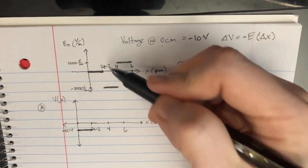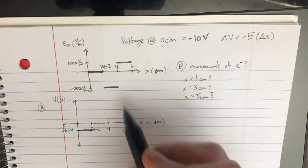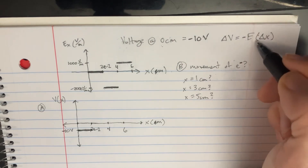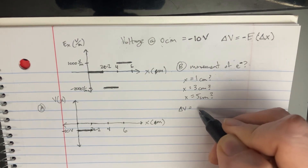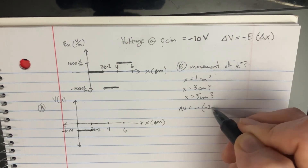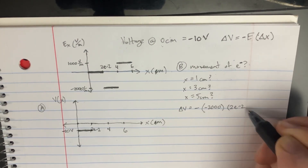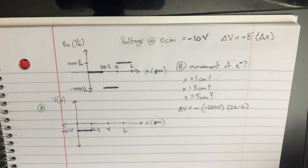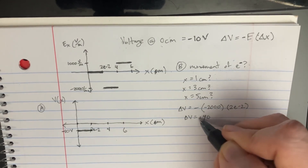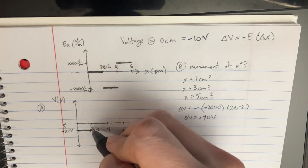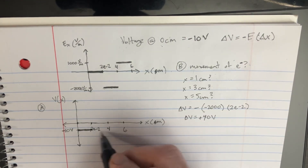Now, the next step is going to be that we're going through this field of negative 2,000, and that's going to be for 2 centimeters. We can calculate it here: delta V would be equal to negative 2,000, times the delta X, which would be 2e to the negative 2 meters. So delta V would actually be plus 40.